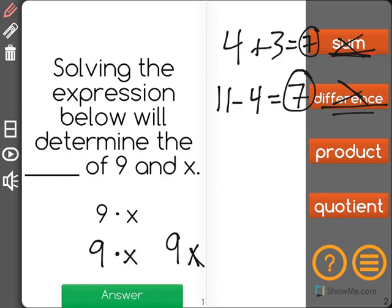A product is the answer of a multiplication problem. So 4 times 3 equals 12. 12 is the product.